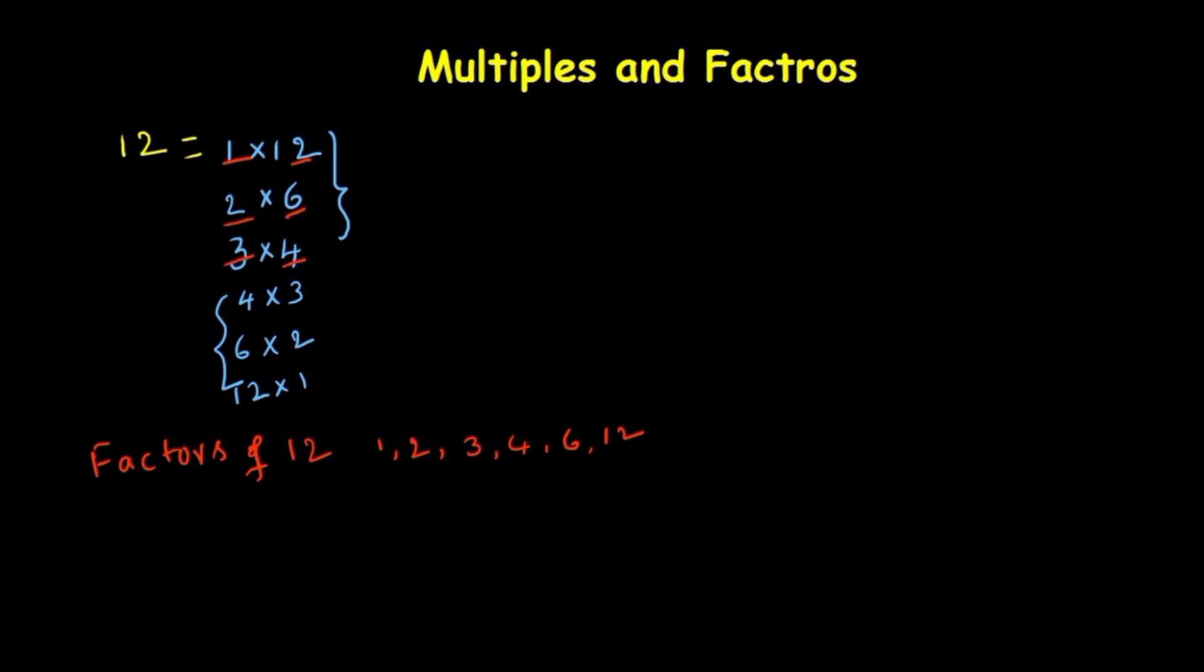So what is the meaning of factors? If you divide by selecting any number from this, for example 6, if you divide 12 by 6, it should be divisible exactly. 6 times 2 equals 12, it leaves remainder 0. Then we can say this divisor is a factor of the dividend.